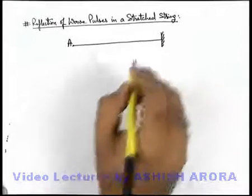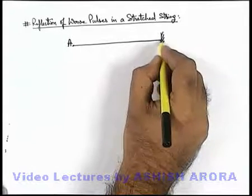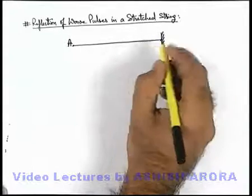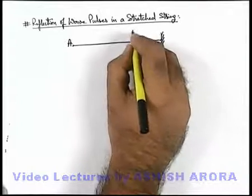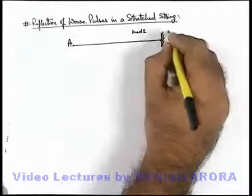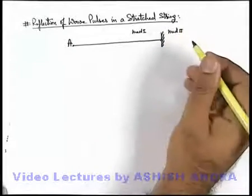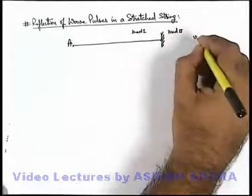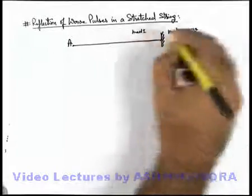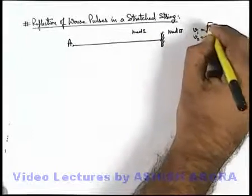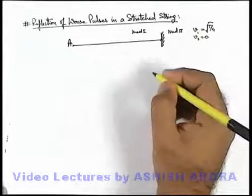This pulse will be incident on the wall and will be reflected. Here we can treat this string as medium 1 and this wall as medium 2. As we know the wave can never enter into the wall, we can write v2 is equal to zero and v1, the velocity of wave in the string, can be written as root T by mu which we can calculate.